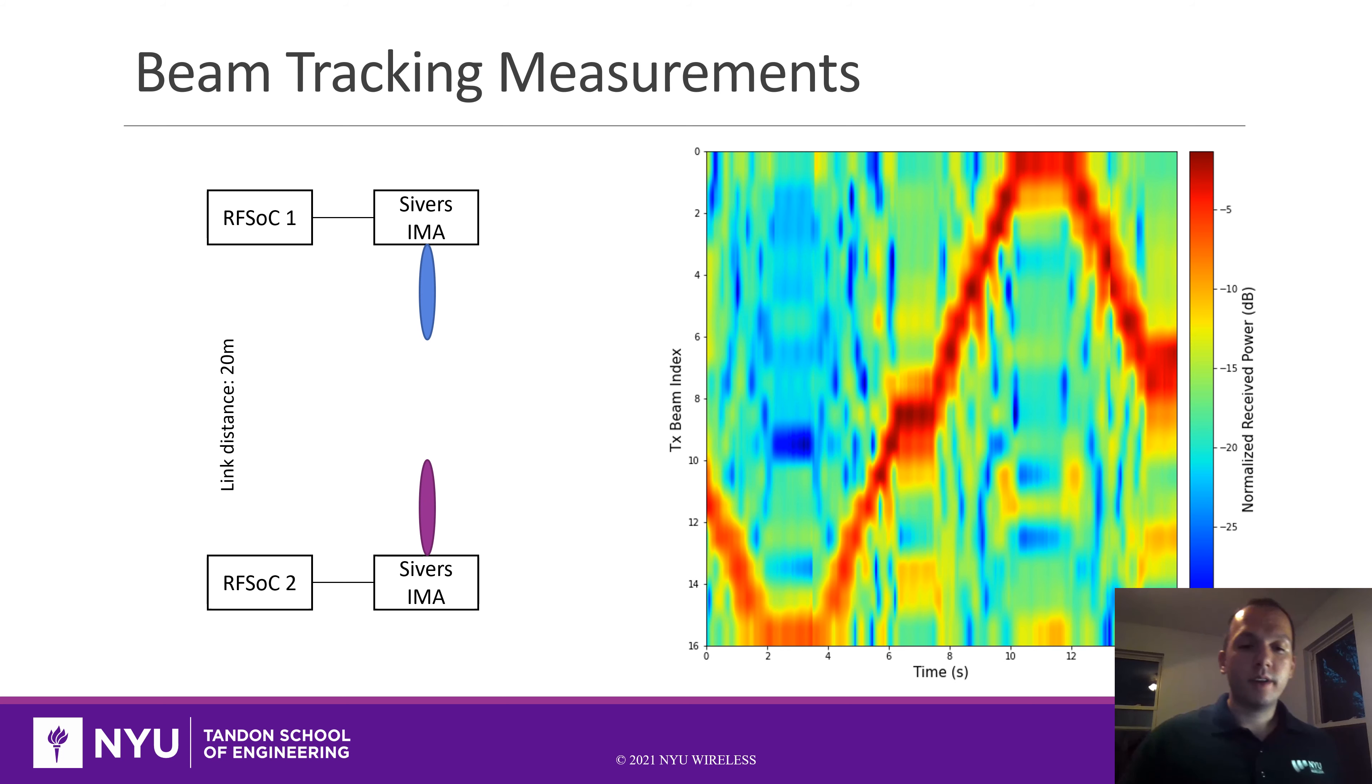The channel sounder and the XY table can also be used to create motion. The idea is that, like in 5G NR, one of the nodes might be in motion and the other node might do some beam search. The question is, how can you basically track this information? For this, we built this heat map, which is basically the normalized received power for each TX beam index at each time.